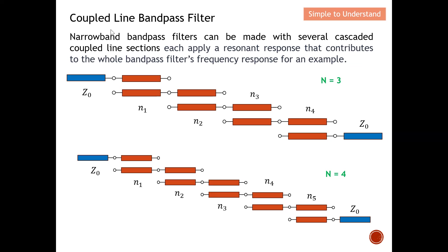A very narrow-band bandpass filter can be made with several cascaded coupled-line sections, each applying a resonant response that contributes to the whole bandpass filter's frequency response. As you can see, there are several cascaded coupled-line sections used to implement this bandpass filter — this is what we call a coupled-line bandpass filter.